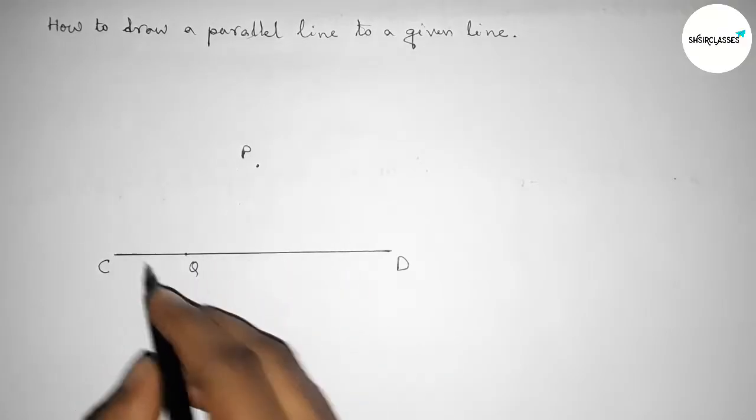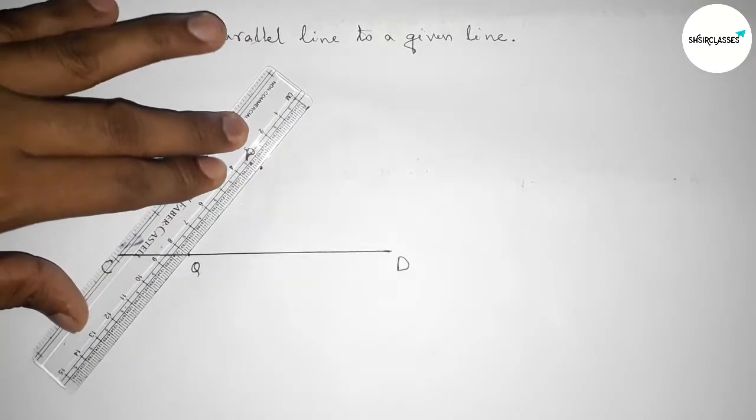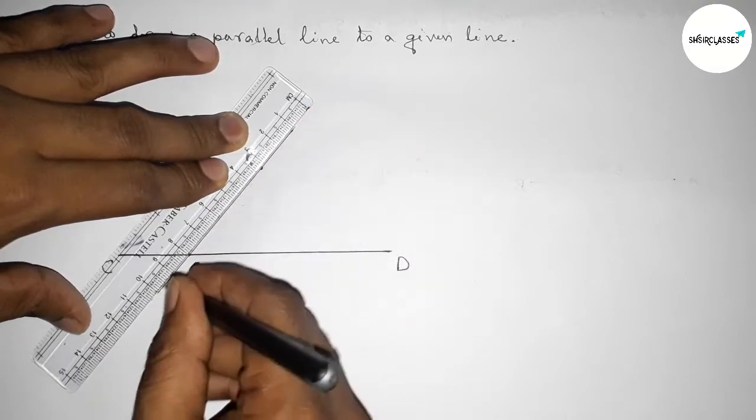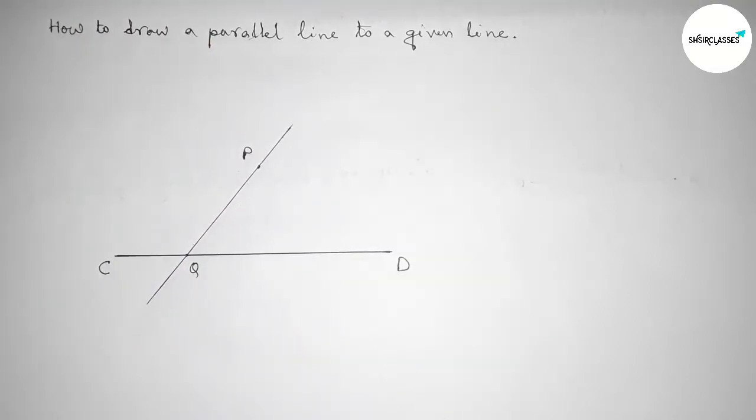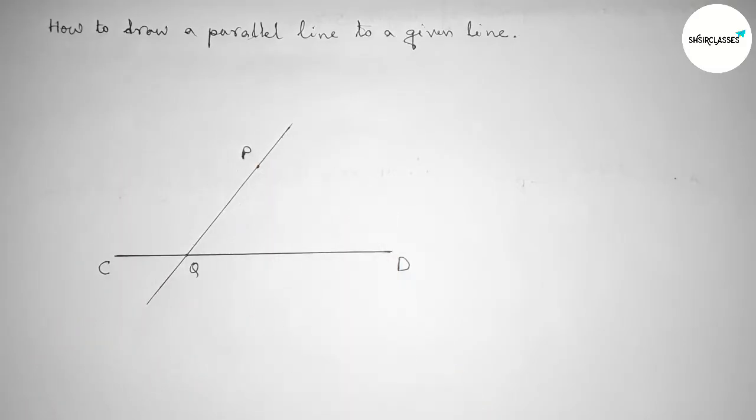Now joining this line first. Next we have to draw a parallel line through the point P. So first we have to take the measure of the angle here.